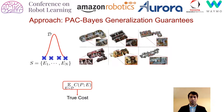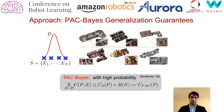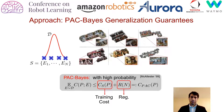So computing the true cost directly is not possible. This is where the PAC-based generalization guarantees come to our rescue. They provide an upper bound, C_PAC, which is composed of two terms: the training cost and a regularizer. We can then obtain a policy P by minimizing this upper bound, which would ensure that the true cost is also small.